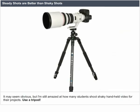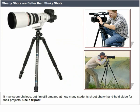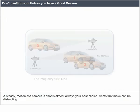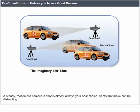Steady shots are better than shaky shots. It may seem obvious, but it's amazing how many students shoot shaky handheld video for their projects. Use a tripod. Don't pan, tilt, or zoom unless you have a good reason. A steady, motionless camera is almost always your best choice.